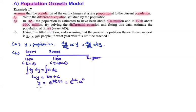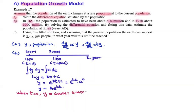Since e^c is a constant, we can represent it as constant A, giving y equal to A·e^(kt). When t is 0, y is 600 million. Substituting, 600 million equals A·e^(k×0), which means A is equal to 600 million, or 6×10^8.